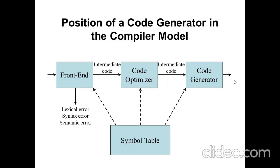We already know the pieces of a compiler. The code generator in the compiler model is the last piece. We have the front end, which comprises the lexical analyzer, syntax analyzer, semantic analyzer, and intermediate code generator. It produces output as intermediate code, given as input to the code optimizer. The optimizer generates optimized intermediate code as output, which is given to the code generator. Finally, the code generator generates the target assembly language program.